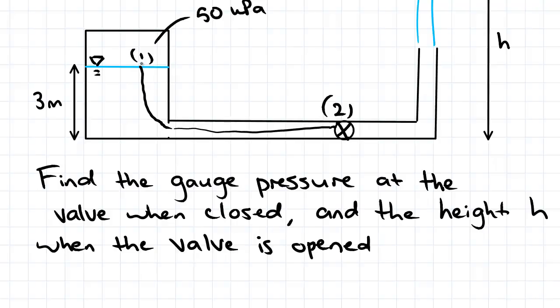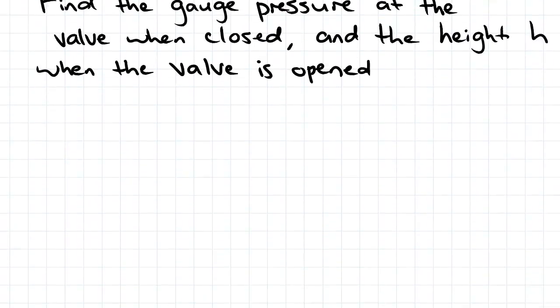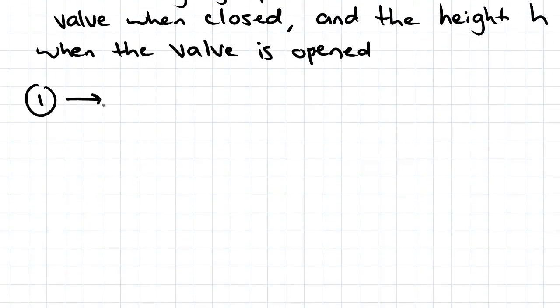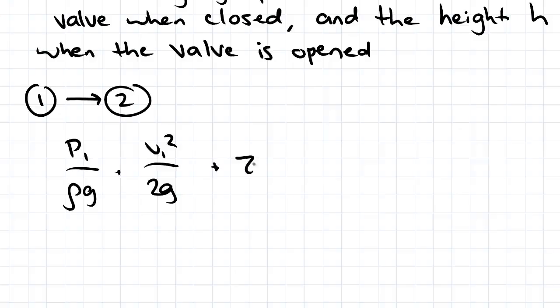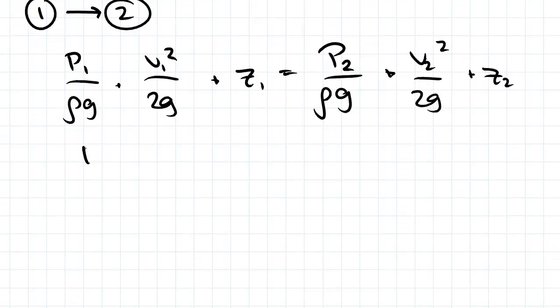We need to find pressure, velocity and height of each point as we've always done. So this is from 1 to 2. P1 on rho g plus V1 squared on 2g. You should be able to write this equation in your sleep by now. And we'll find each of the terms we need.